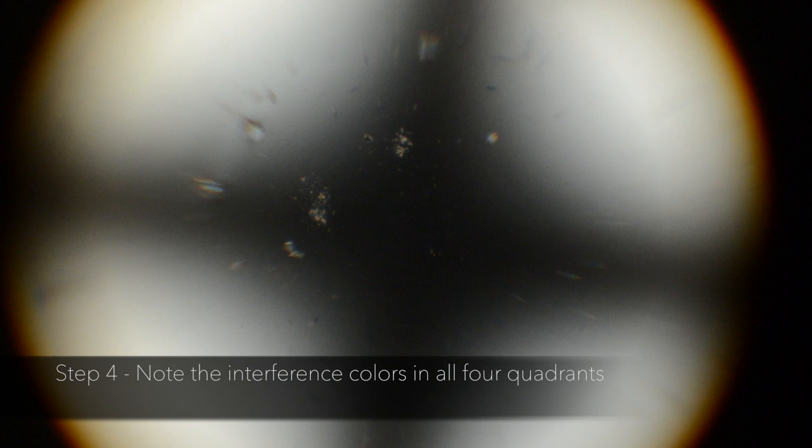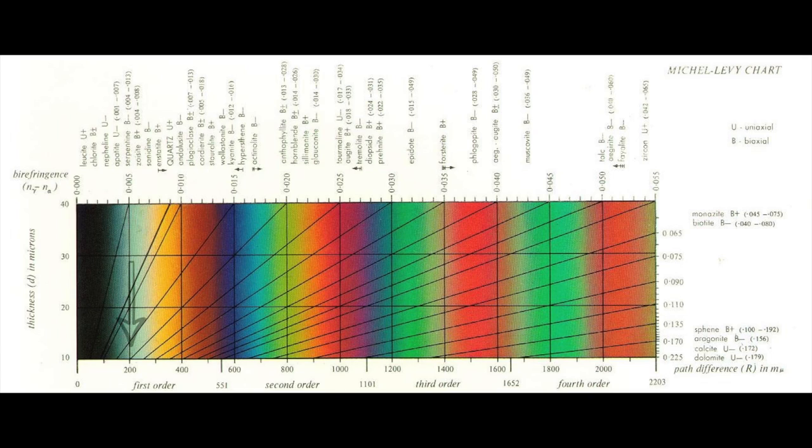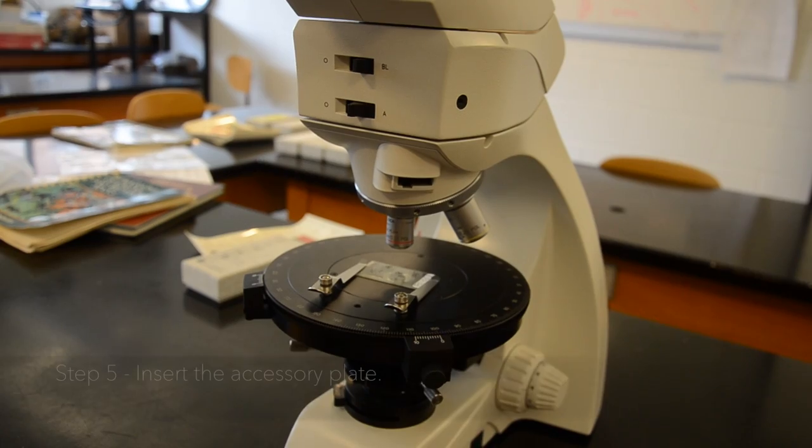Step 4: Note the interference colors in all four quadrants. In this example, all four quadrants are a first order white.